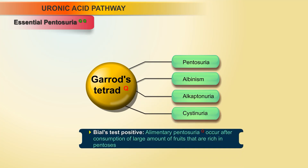Bial's test positive. Alimentary pentosuria occurs after consumption of large amounts of fruits that are rich in pentoses.